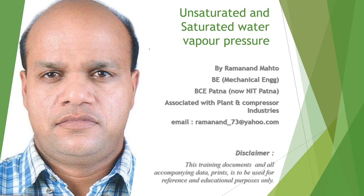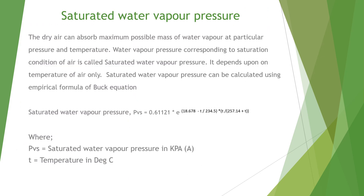Unsaturated and saturated water vapor pressure. Saturated water vapor pressure: dry air can absorb a maximum possible mass of water vapor at a particular pressure and temperature. The water vapor pressure corresponding to the saturation condition of air is called the saturated water vapor pressure. It depends on the temperature of air only.